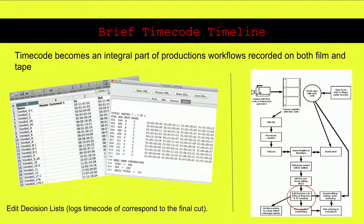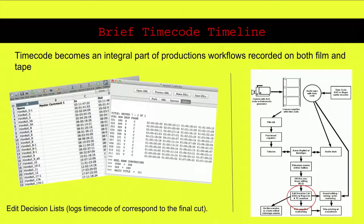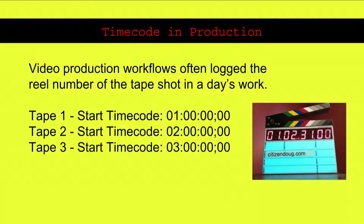Time code became an integral part of production workflows in both film and video environments. On the left side are some screen grabs of what is called an Edit Decision List, or EDL. Documents such as EDLs are often included with media collections acquired by my archive at New York University. When these time codes are actually in a digital copy that researchers can access, the research value of these documents raises. Professional production workflows often log the real number of a tape shot in that day's work — tape one starts at the one-hour mark, tape two at the two-hour mark, and so on.